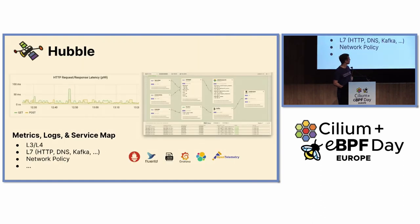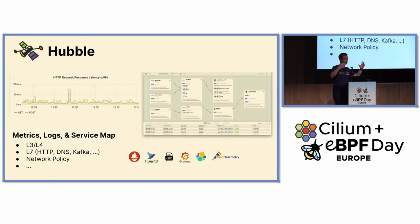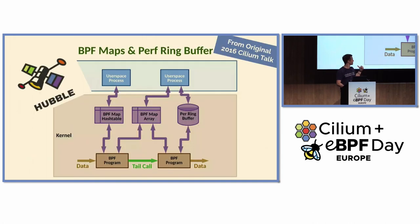This is how Hubble looks today: we have shiny dashboards, metrics, service maps — all of that based on this foundation of eBPF. It looks a little bit better today than the diagram we had back in 2016; today we can actually show actual dashboards.